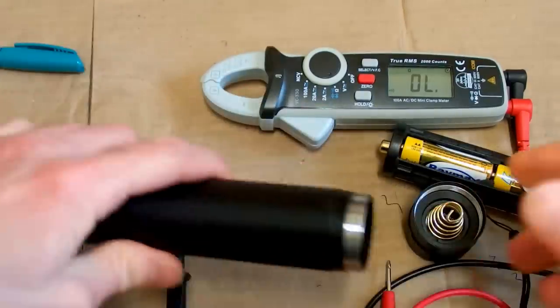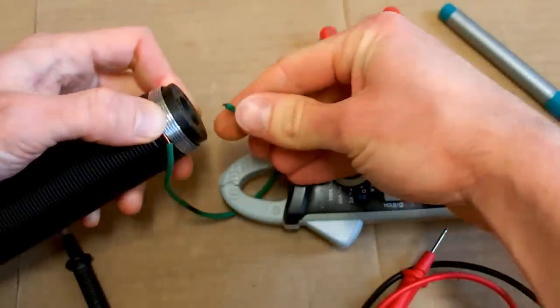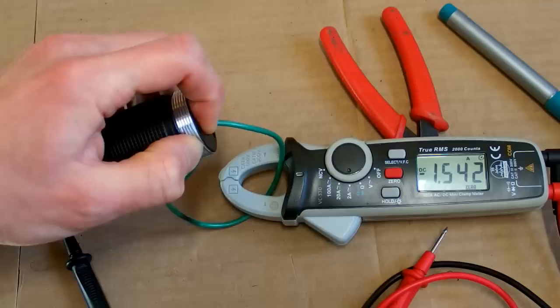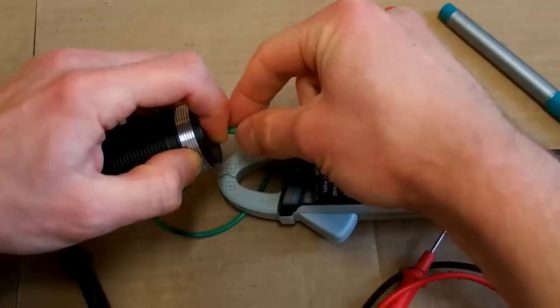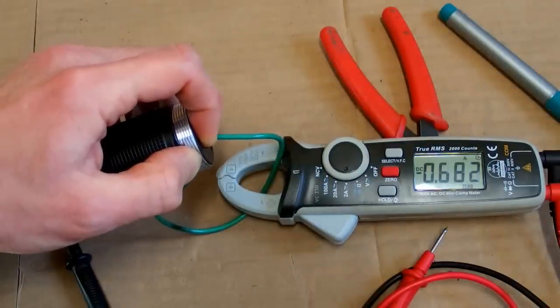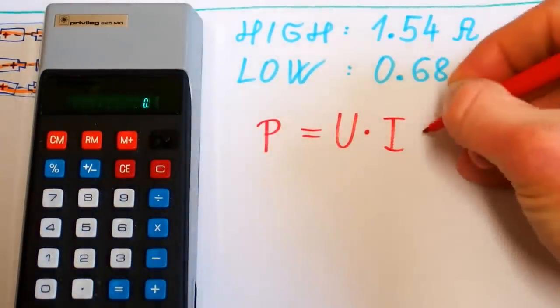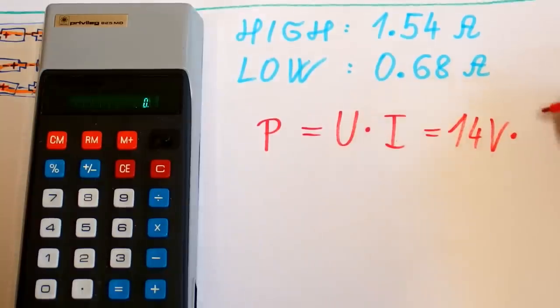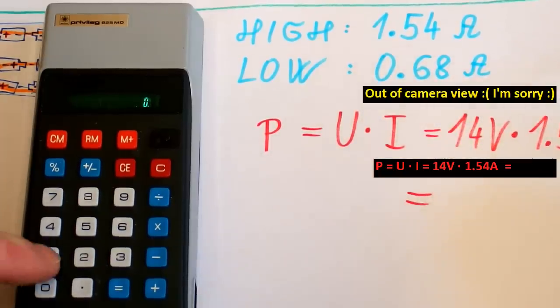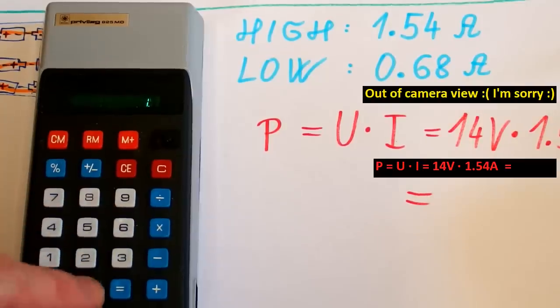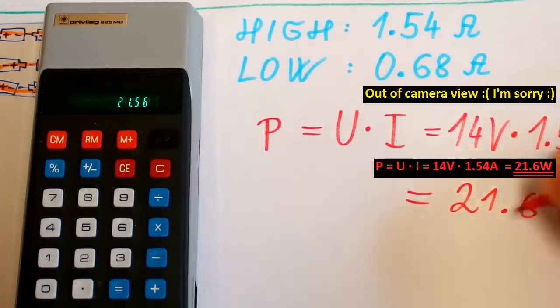But before opening it let's measure the current it draws. So let's measure the current using my clamp meter and a loop of wire. Let's connect it like this. At the high intensity it's 1.54 amps. And the low intensity is 0.68 amps. So the power is P equals U times I. And this is the voltage. About 14 volts times the current, 1.54 amps for the high setting. And this is about 14 times 1.54... 21.6 watts. Which is quite a lot.